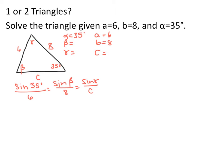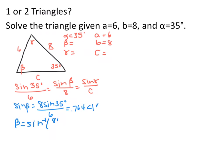First, solve for beta. Sine of beta equals 8 times sine of 35 degrees over 6, which gives 0.764 — that's between negative 1 and 1, so we're going to have at least one triangle. Taking the inverse sine of 0.764, we find beta equals 49.886 degrees.